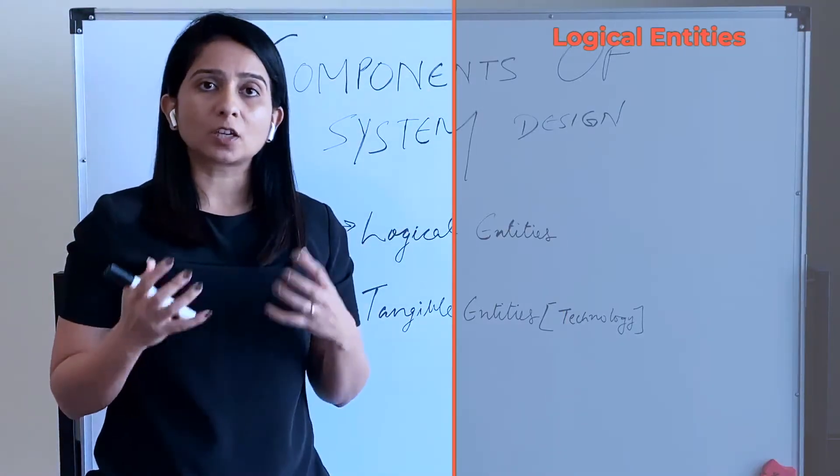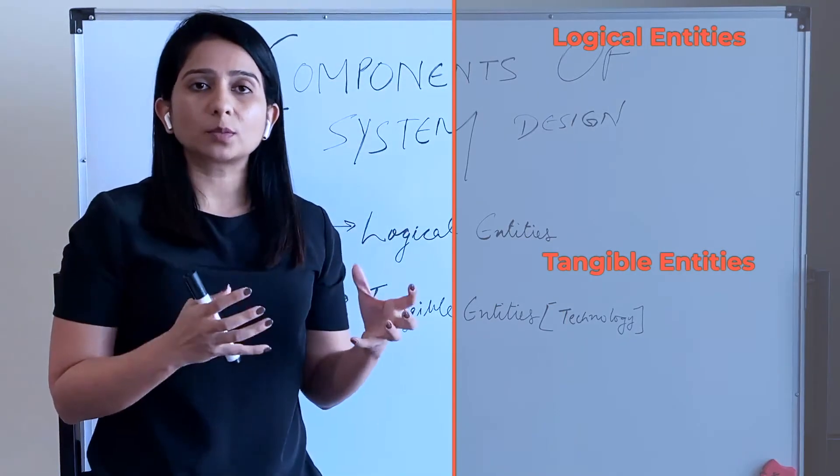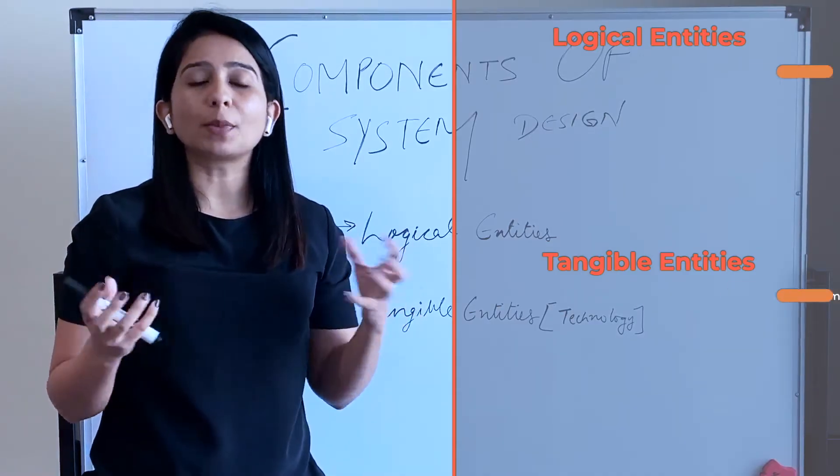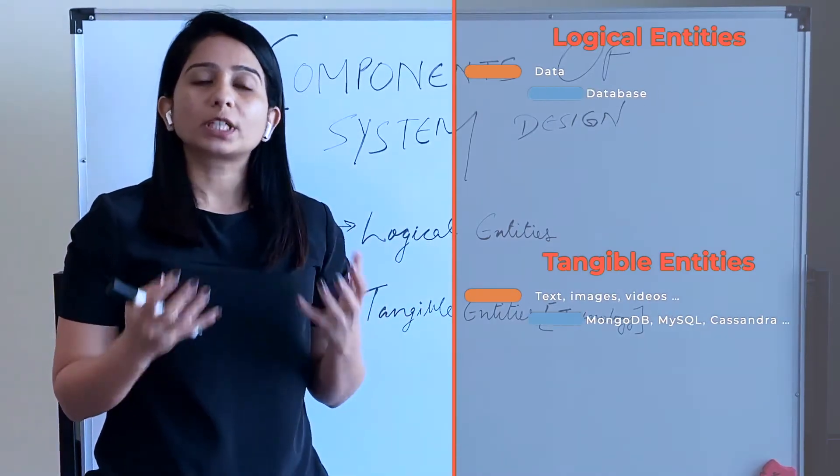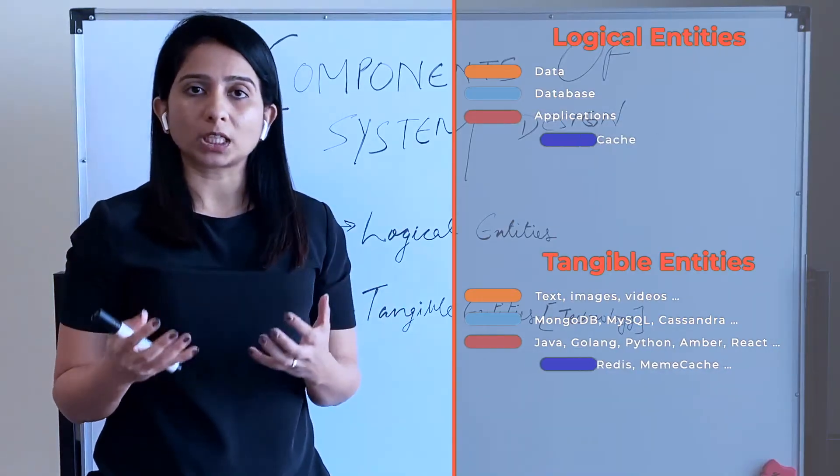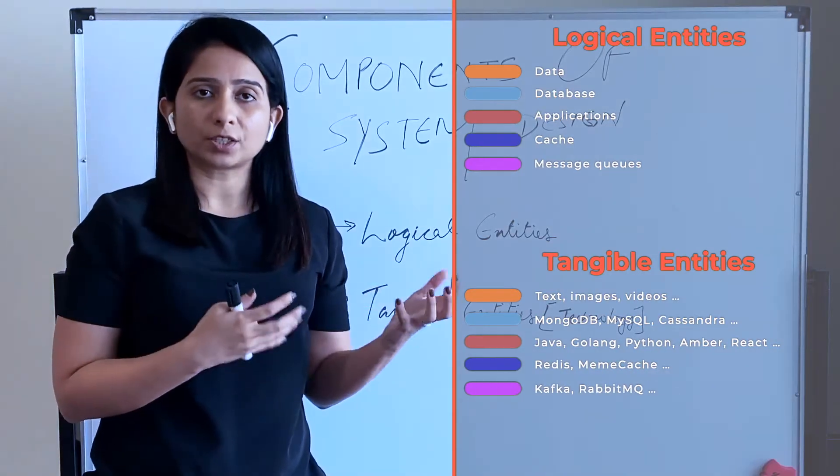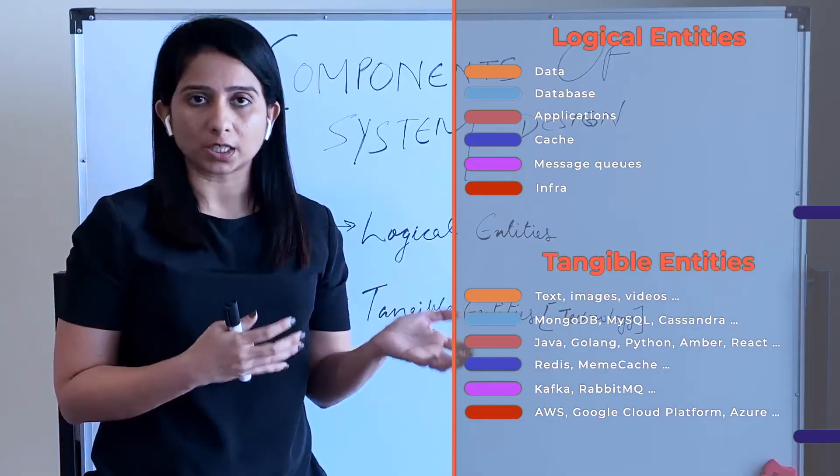Now that we understand the logical entities of the system, let's see what are the tangible entities or technologies that make up for these components. For databases, we have multiple options like MongoDB, MySQL, Cassandra, Redis, etc., which we are going to learn in detail in this course.